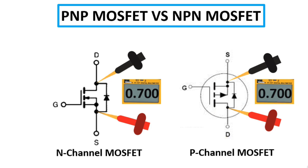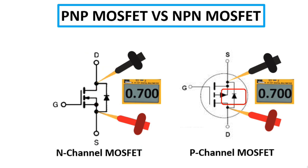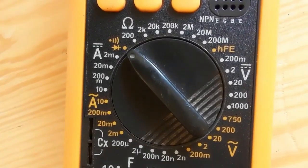To remember: when the cathode (negative terminal) of the diode is connected to the drain, that means N-channel. When the positive terminal (anode) of the diode is connected to the drain, that means P-channel. Also, if you get continuity while testing MOSFETs or transistors, that means the component has failed.